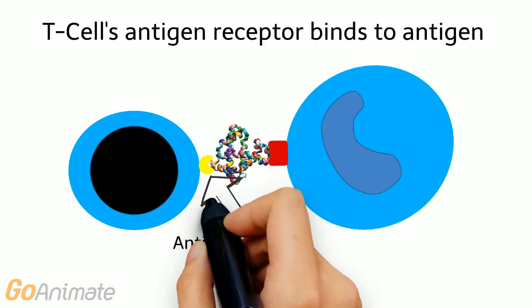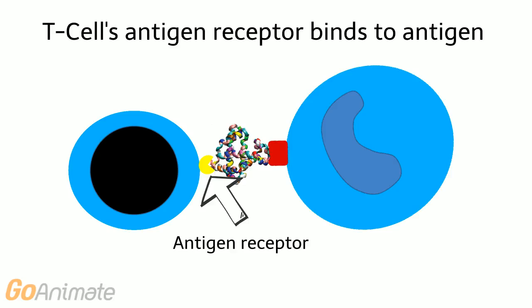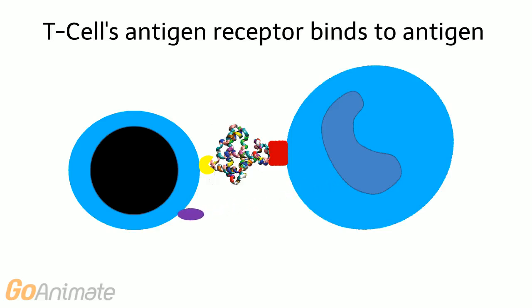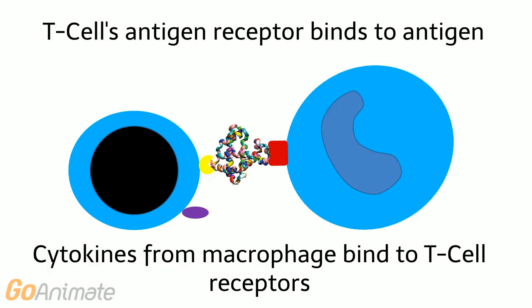Here a macrophage has displayed an antigen on an MHC protein — we say the macrophage is an antigen-presenting cell. Lymphocytes can now connect to the antigen via an antigen receptor. The macrophage responds to this connection by secreting proteins or peptide substances called cytokines. Cytokines can bind to the surface of T lymphocytes. The antigen-antigen receptor connection along with the secretion of cytokines works to activate the T cell. This process is called co-stimulation.